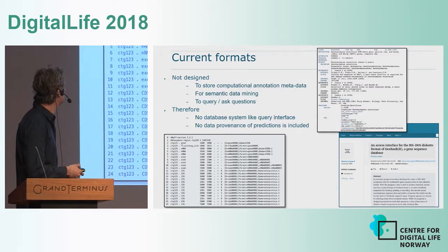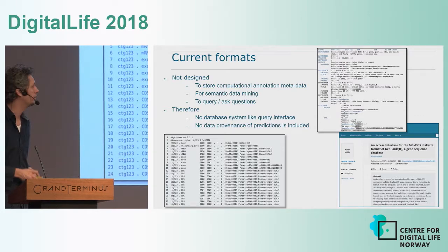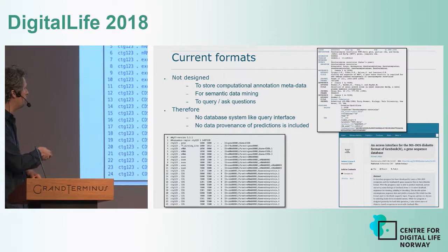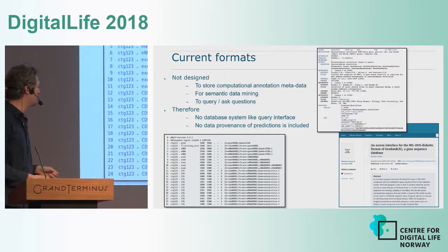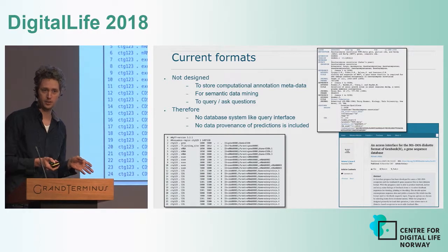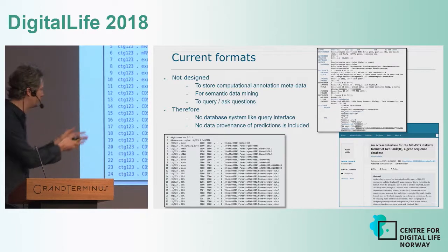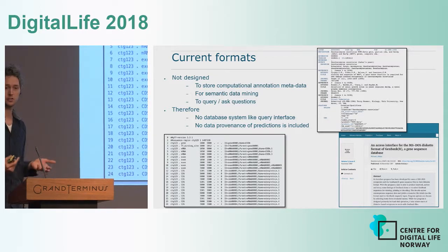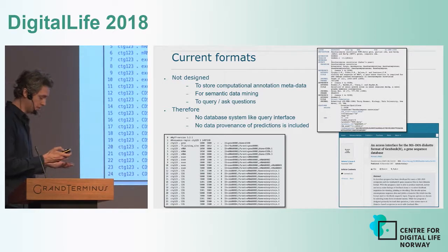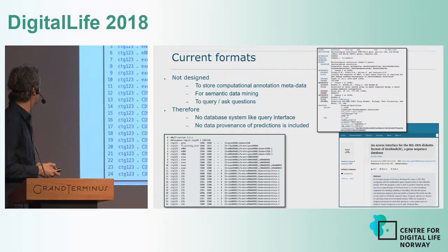The current formats — some of you might know them — include the GenBank/EMBL format and the GFF format, with a way of accessing them that dates back to the 1980s using a floppy disk, which was very intuitive back then but hasn't changed much. We're still using these formats where you cannot store computational annotation metadata, and you cannot mine it easily or ask any questions.